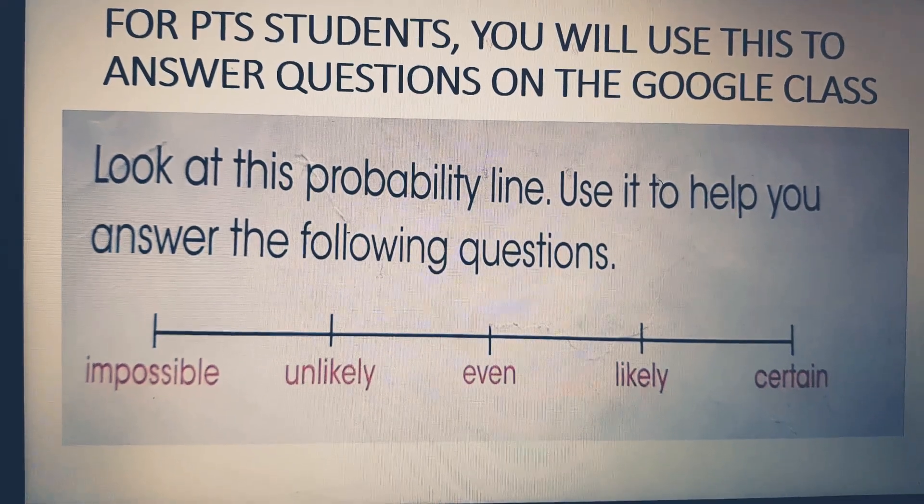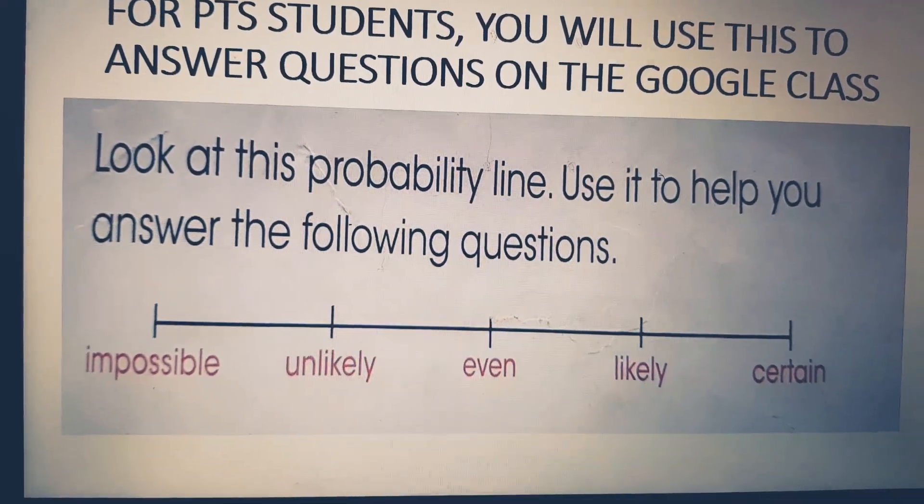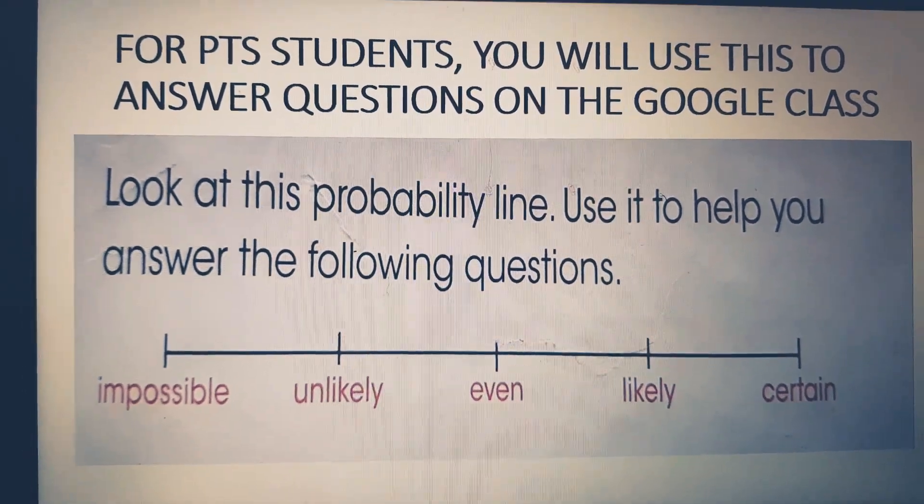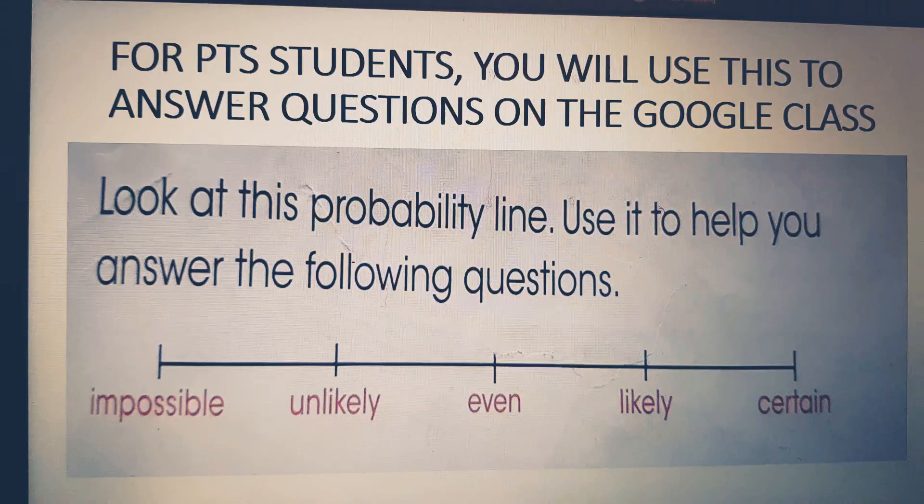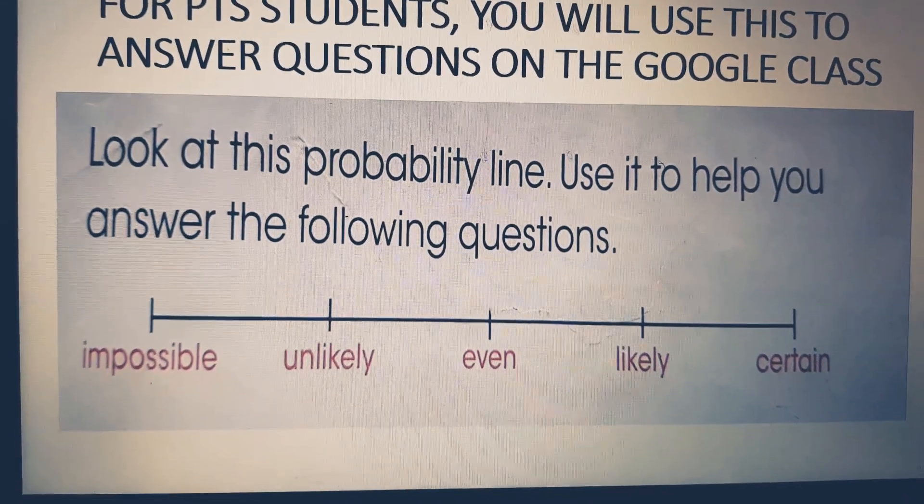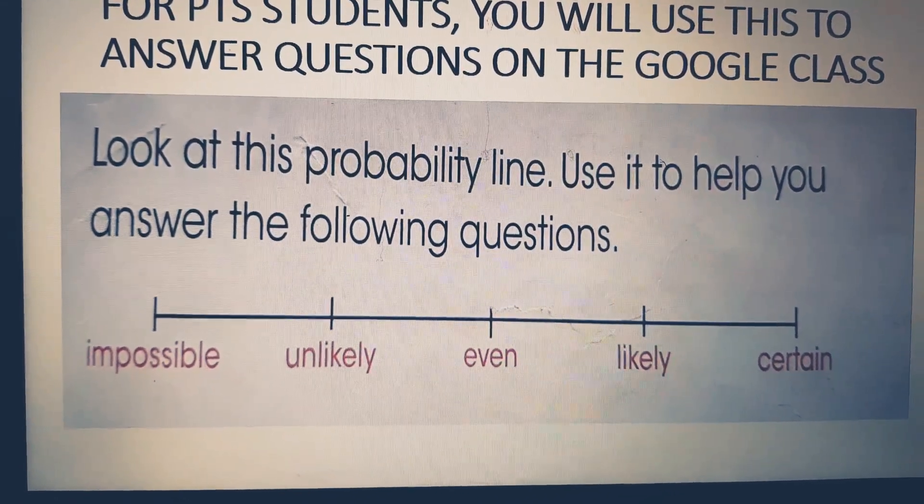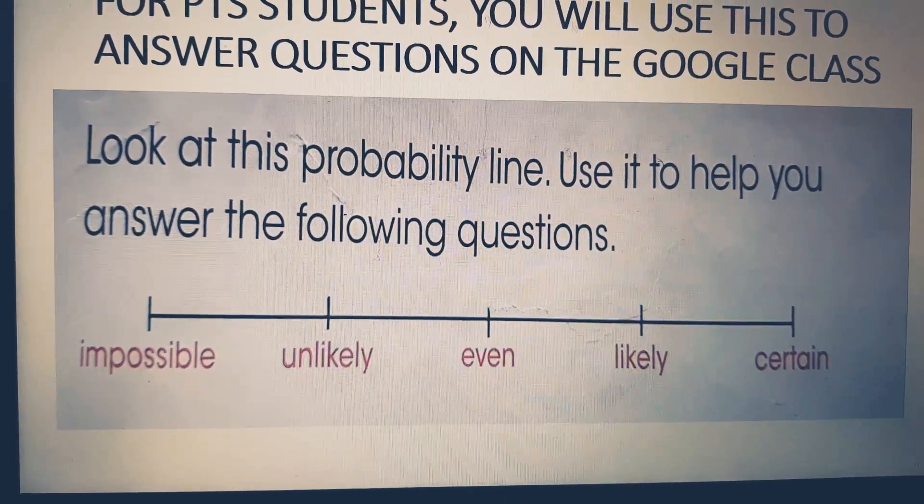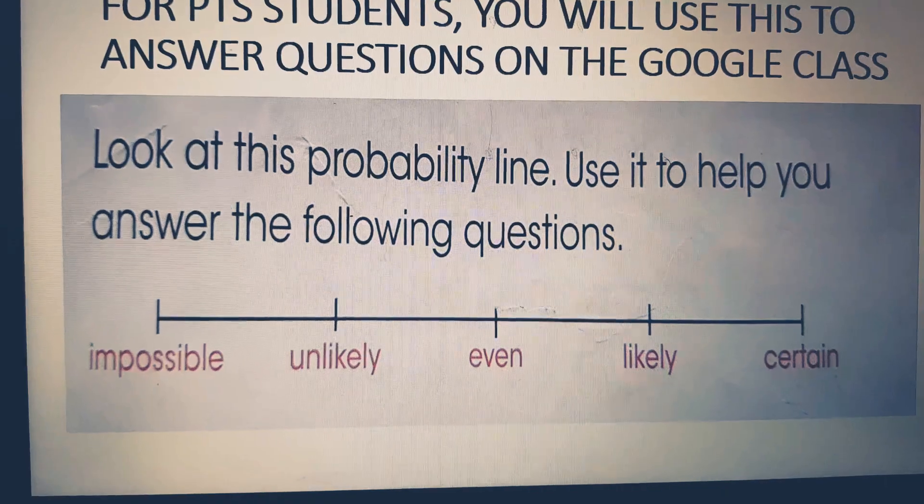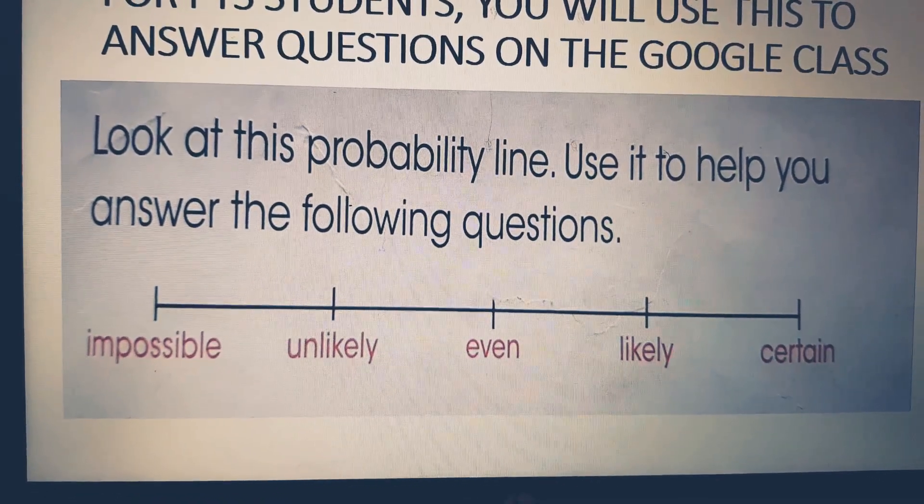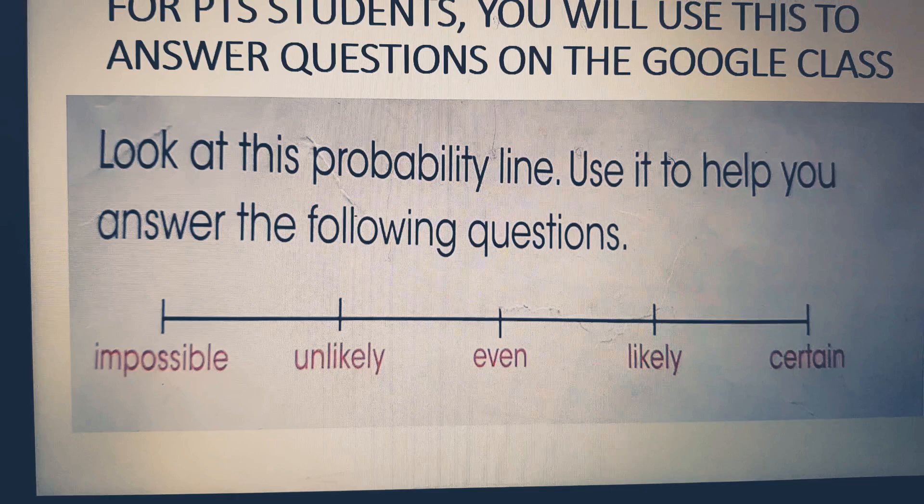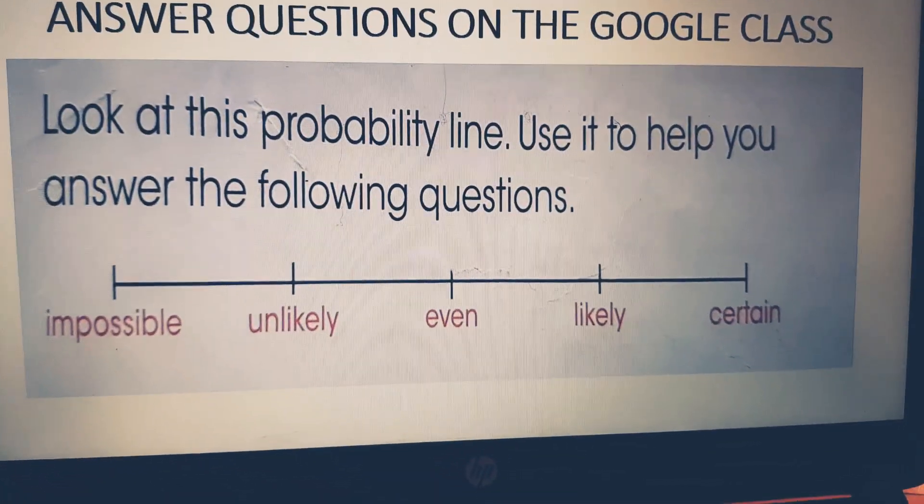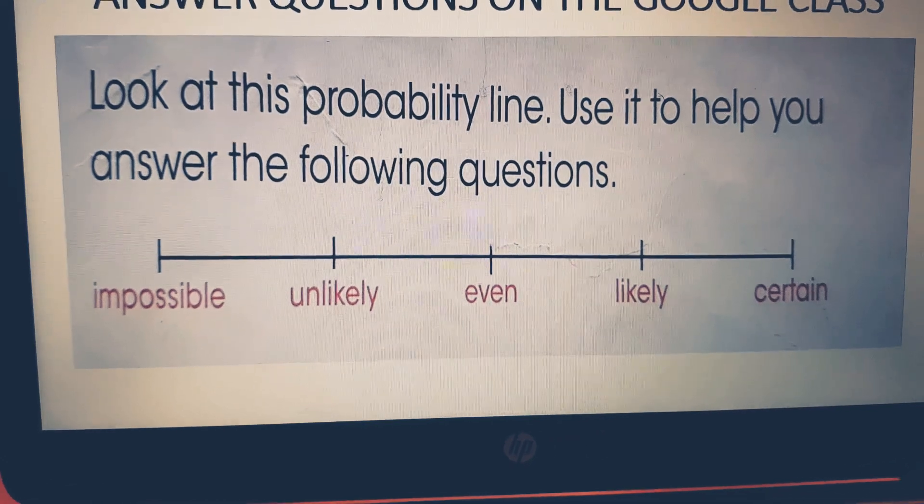And for likely, it has high chances that it will happen, but it has a chance that it might not exactly happen. And finally, the last one, certain - it can really be relied on that it can happen, and it has a very high chance that it will happen. So you will use these words to answer the questions.